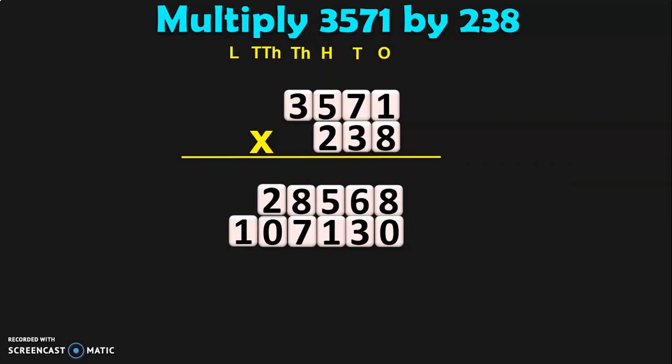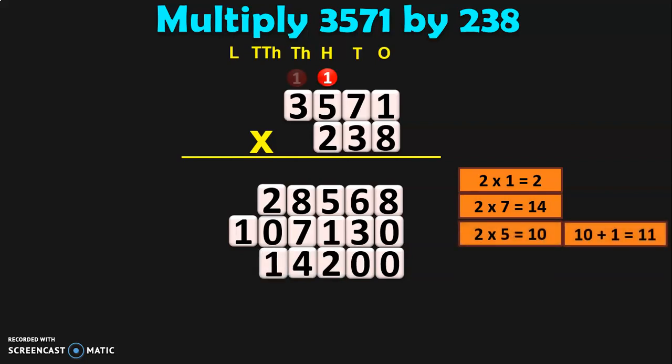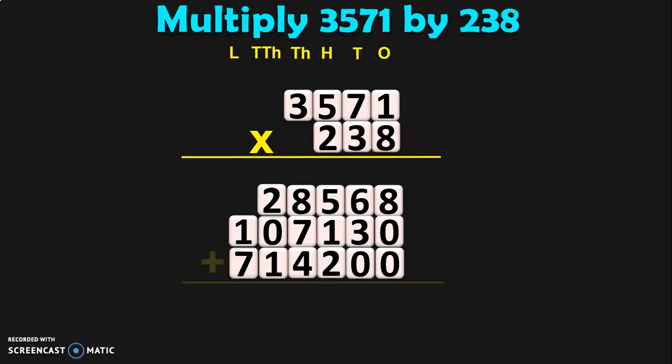Next, multiply 3571 by 200, because 2 is in the 100s place. So, add 2 zeros: one in the 1s place and another 0 in the 10s place. Begin multiplication of the numbers by 2. 2 into 1 is 2. 2 into 7 is 14 — 4, carry over 1. 2 into 5 is 10, plus 1 is 11 — 1, carry over 1. 2 into 3 is 6, plus 1 is 7. Now we have got 3 products.